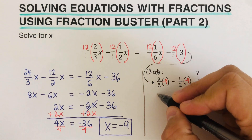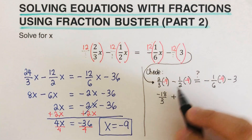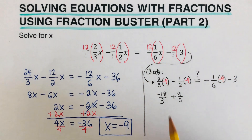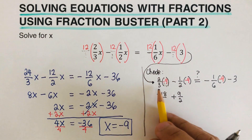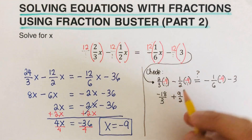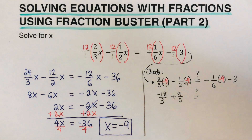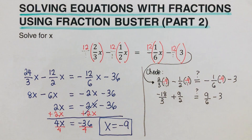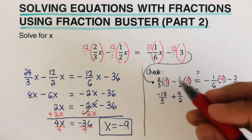On the left: 2 times negative 9 is negative 18 over 3. Then minus negative 9 over 2 becomes plus 9/2 because a negative and negative make a positive. Note: the 3 and 2 keep their original denominators since their invisible denominator is 1. On the right: negative times negative gives positive 9/6, minus 3. We'll work each side separately.